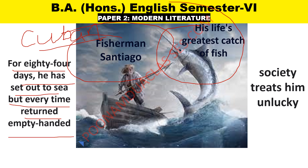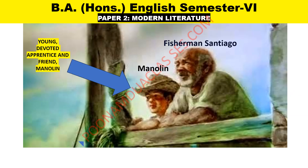For 84 days he did not get success, and hence society treats him as unlucky. Everyone thinks that Santiago is very unlucky, and whoever is associated with him will also be unlucky. With Santiago, there is a young trainee named Manolin, a very young, devoted apprentice and great friend. Although Manolin was forced by his parents to leave the old man and fish in a more prosperous boat, still the boy continues to care for the old man, going to him every night, providing him with food and all other comforts.